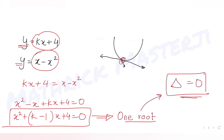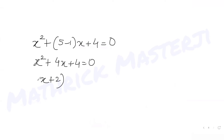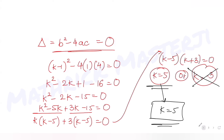Now with k = 5, we find the coordinates of point P — the point where the line touches the parabola. Substituting into our quadratic: x squared plus (5 minus 1)x plus 4 = 0, giving x squared plus 4x plus 4 = 0, which factors as (x + 2) squared = 0. So x = -2.